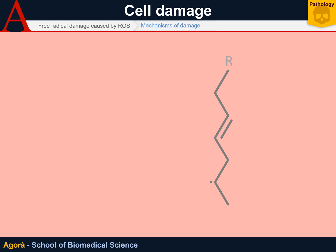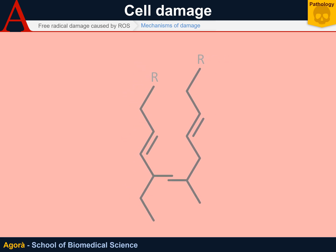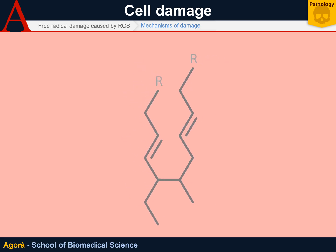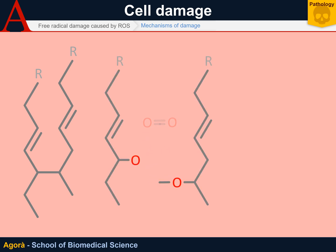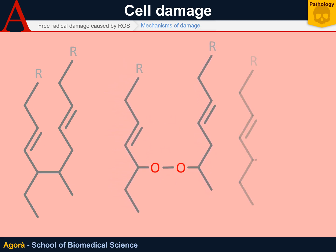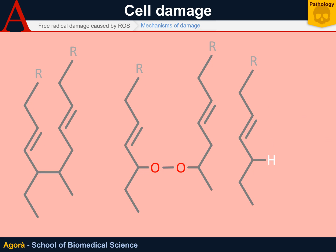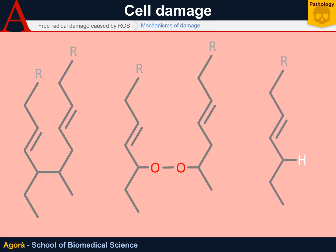There are three possible cases leading to the end of this process. The mechanism may end if two lipid radicals interact with each other and generate a new molecule. Another option is the interaction between oxidized lipids resulting in the formation of an oxygen molecule and the binding of the two oxygen atoms. Lastly, the lipid radical may be intercepted by vitamin E, becoming a radical as we saw earlier, which would result in the reconversion of the lipid radical into lipid.